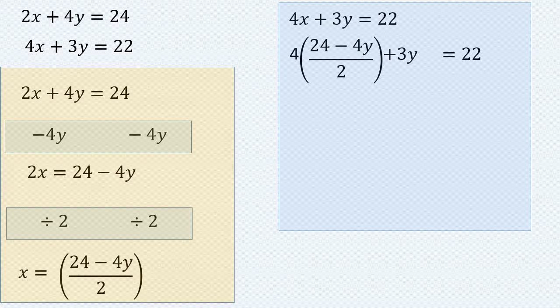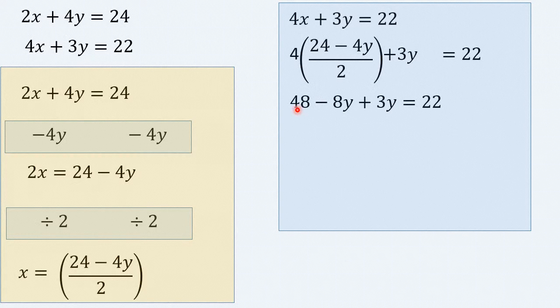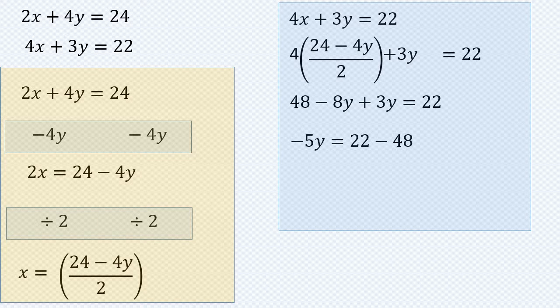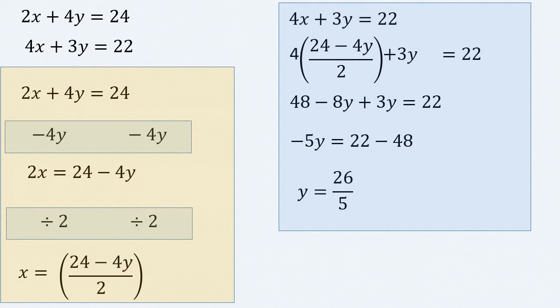Now if you simplify and open the bracket, you will end up with 48 minus 8y plus 3y equals 22, negative 8y plus 3y is simply negative 5y. And if we subtract 48 from both sides of the equation, we will be left with minus 5y equals 22 minus 48. And therefore, y equals 26 over 5, which is equal to 5.2.